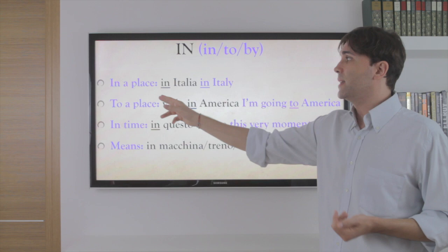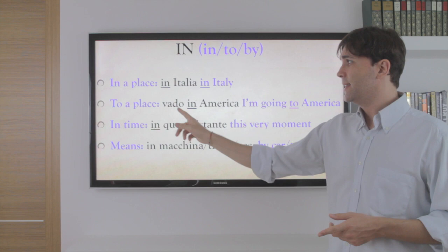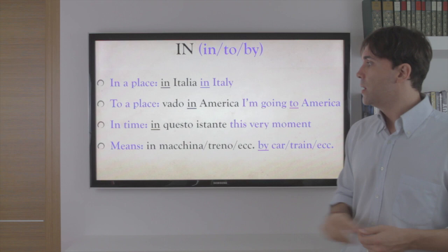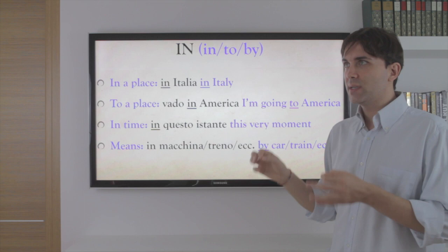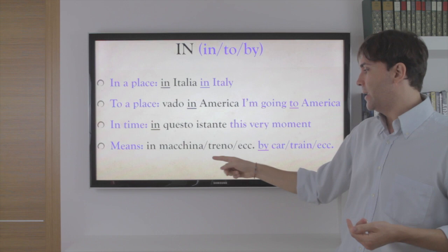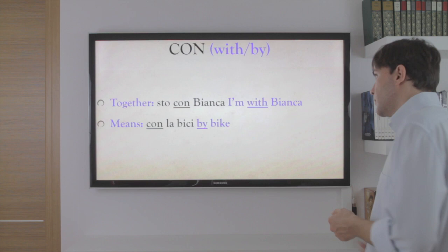In is pretty similar to English. In a place — in Italia, in Italy. But this is different from English: when you say 'to a place,' you can also use in — vado in America, I'm going to America. In time — in questo istante, this very moment. In can also express means — in macchina, in treno — by car, by train.